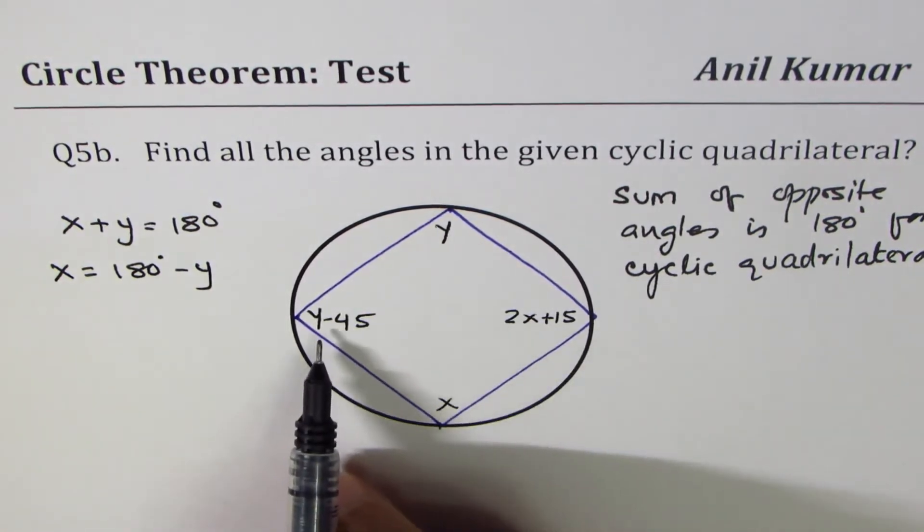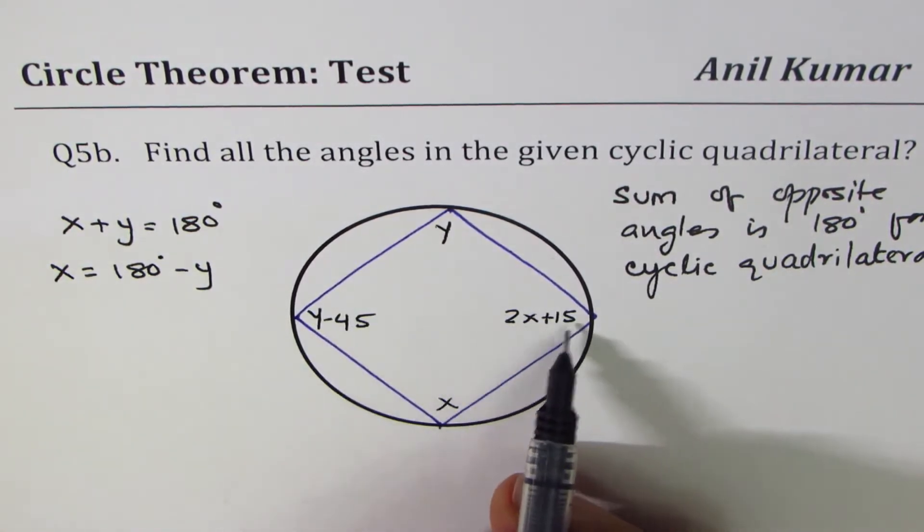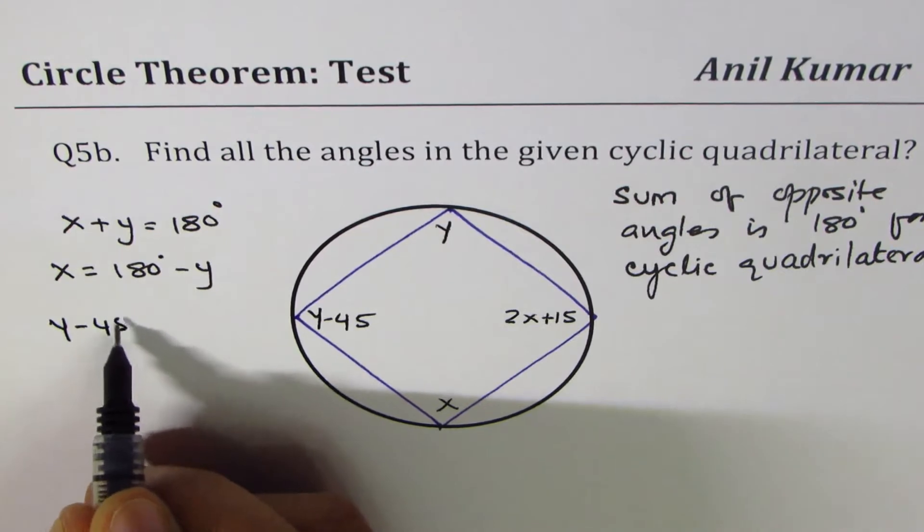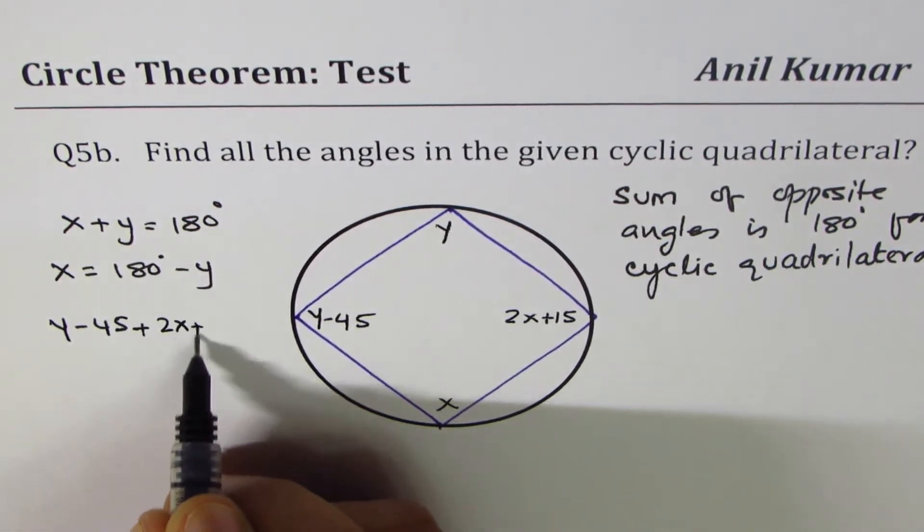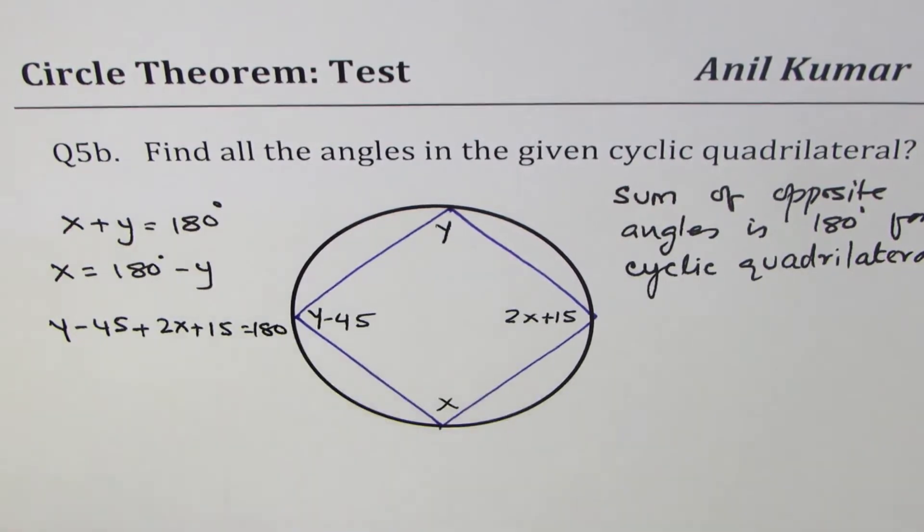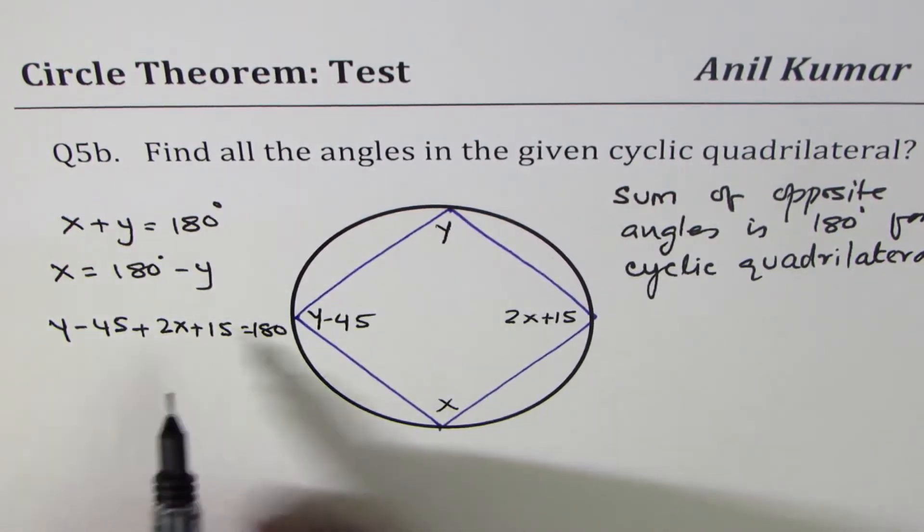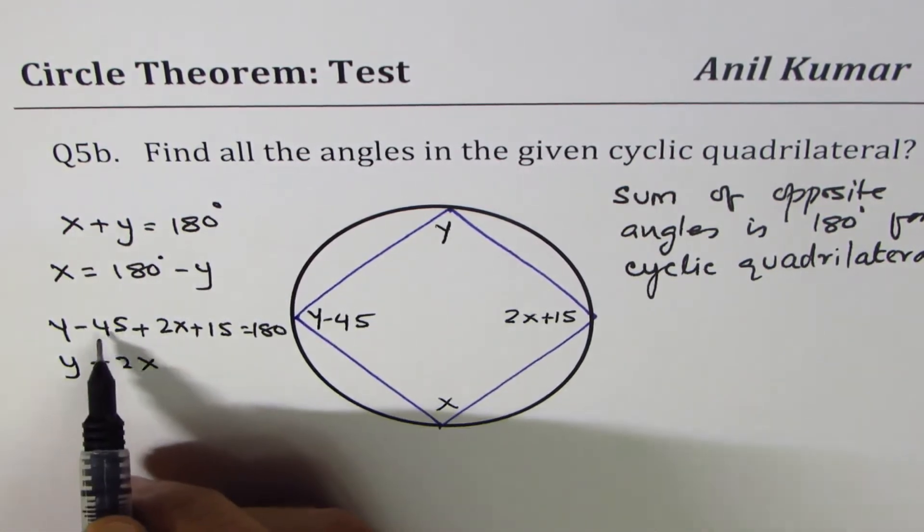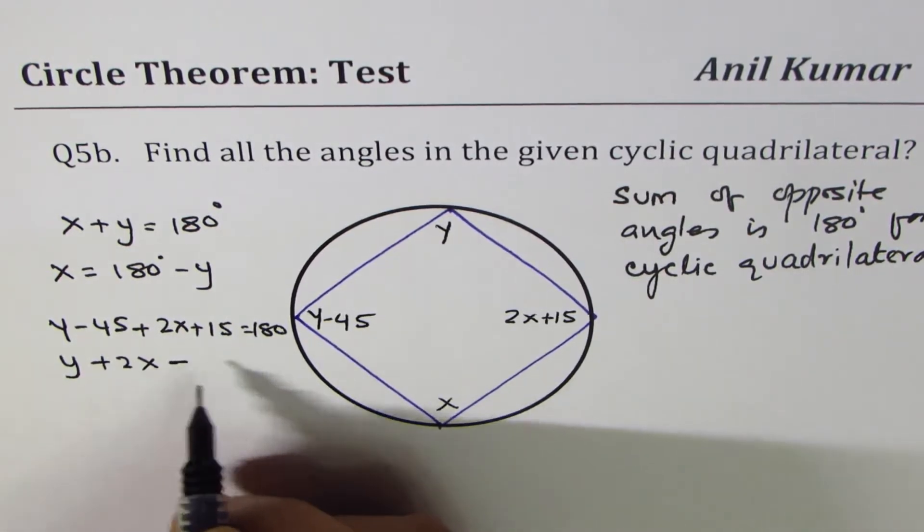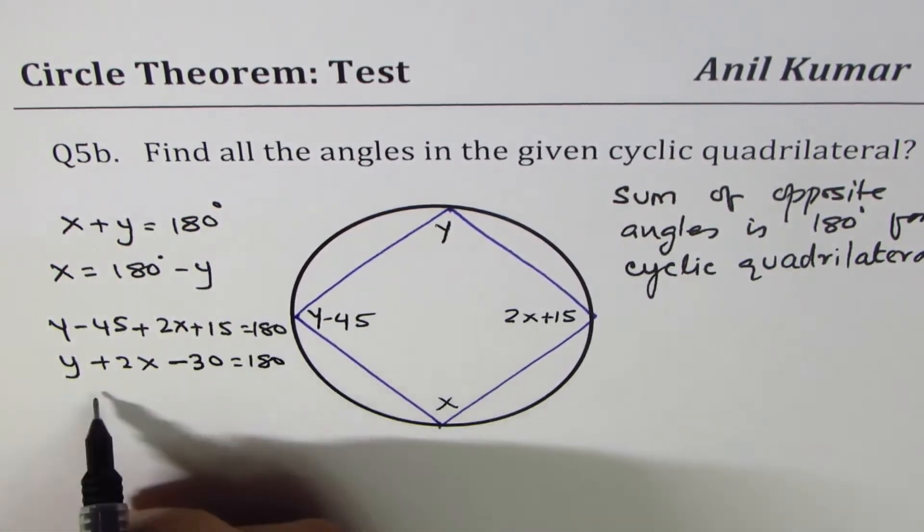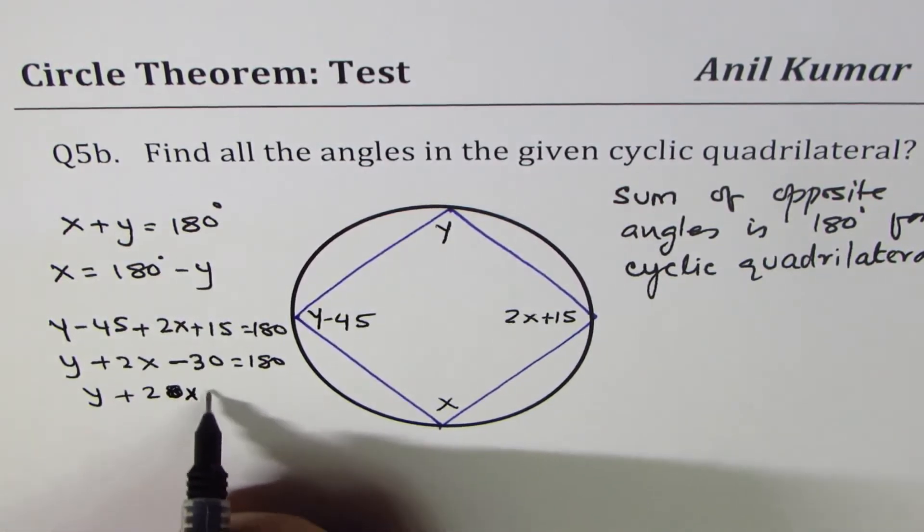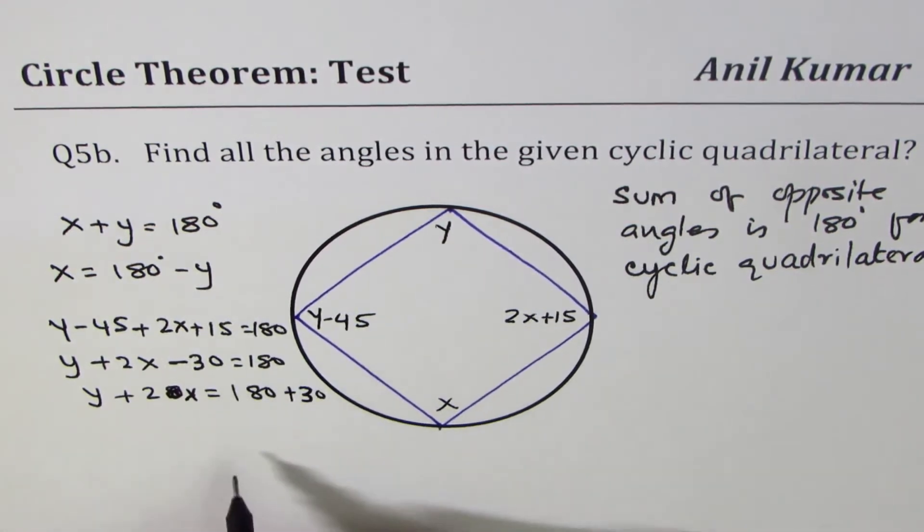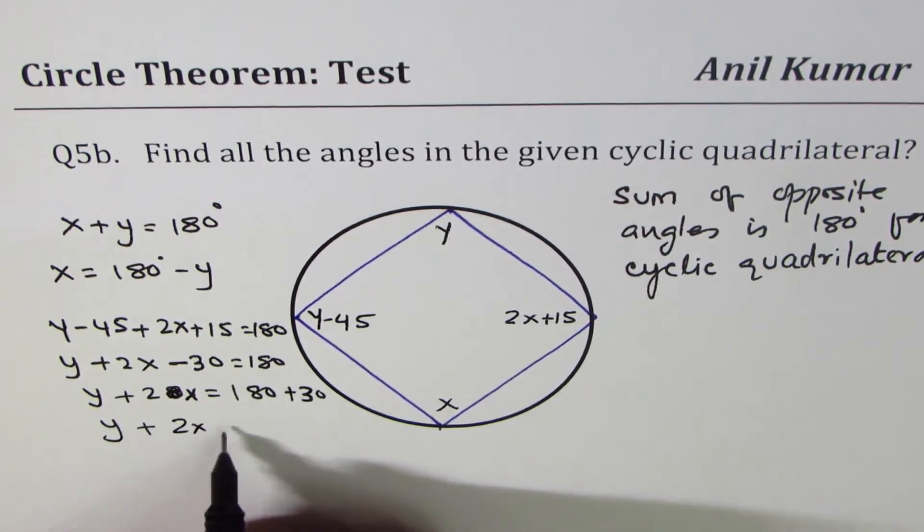The other one is y minus 45 plus 2x plus 15 is also 180 degrees. So we have y minus 45 plus 2x plus 15 equals 180 degrees. That gives us y plus 2x minus 30 equals 180 degrees, so y plus 2x equals 210.